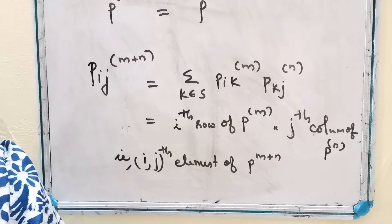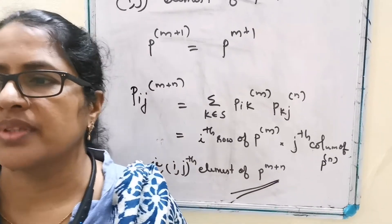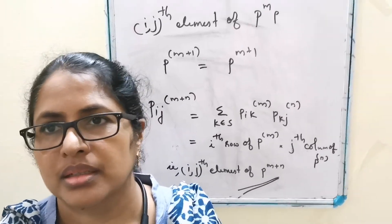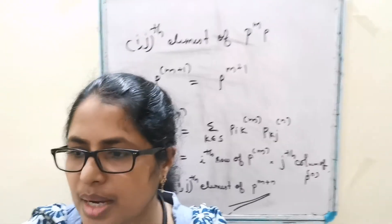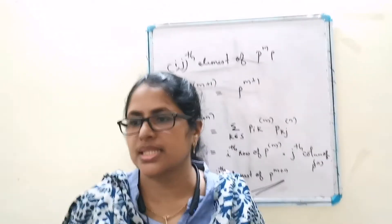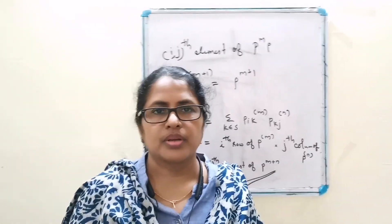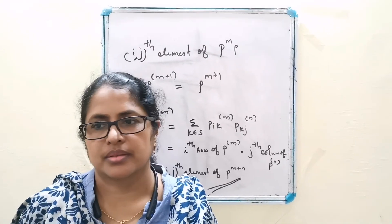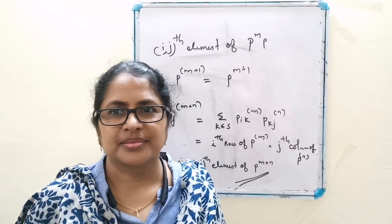The Chapman-Kolmogorov equation establishes the importance of the one-step transition matrix as the basic factor in determining the future behavior of the process. Thank you.